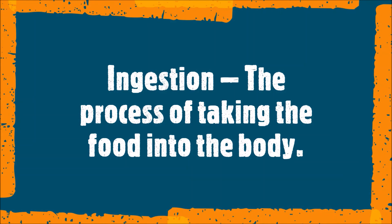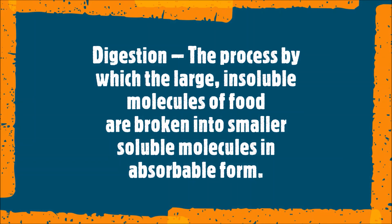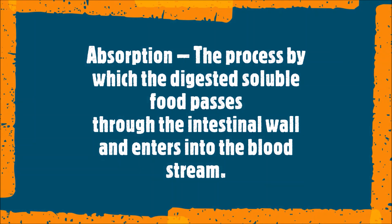The process of taking food into the body is called ingestion. The second step is digestion: the process by which large insoluble molecules of food are broken into smaller soluble molecules in absorbable form. The third step is absorption: the process by which the digested soluble food passes through the intestinal wall and enters the bloodstream.